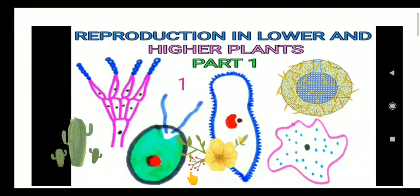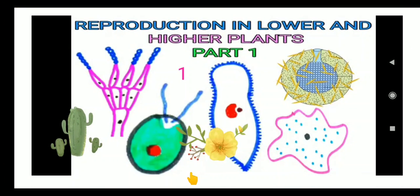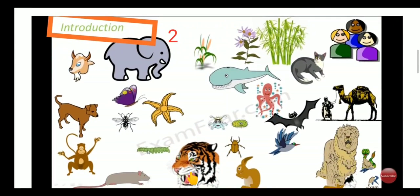Dear students, in the new syllabus of biology, there are a total of 15 chapters. We are going to study the very first chapter, that is reproduction in lower and higher plants. We will see a little bit of introduction about this chapter.